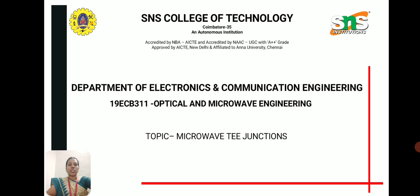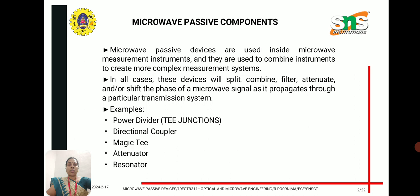Welcome to this video lecture on optical and microengineering. We are going to discuss microwave T-junctions, which are microwave passive components. Microwave passive devices are used inside microwave measurement instruments and are used to combine or divide signals. The signal can be split, combined, filtered, or attenuated. These are the functions of microwave passive components.